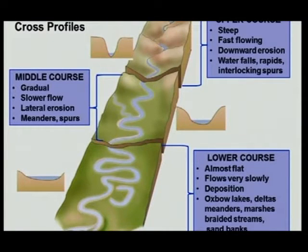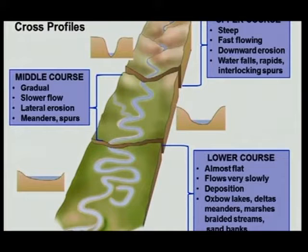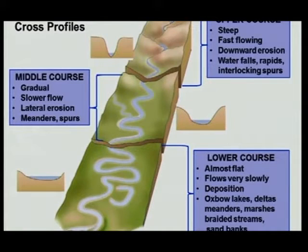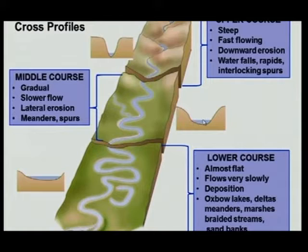Have a look at this cross-profile in the upper course, then the one in the middle course, and then in the lower course. What you must notice is that in the upper course the V-shaped valley is very narrow. As you go to the middle course, the V opens up a little bit. In the lower course the cross-profile is at its widest. This is because lateral erosion widens the channel, and in the lower course the channel keeps getting broader and broader all the time.